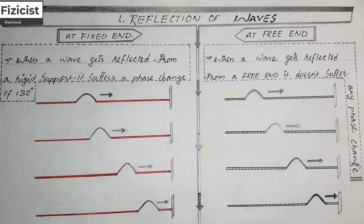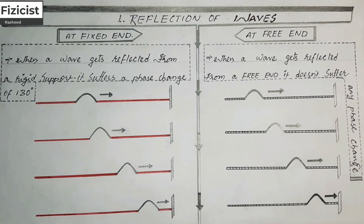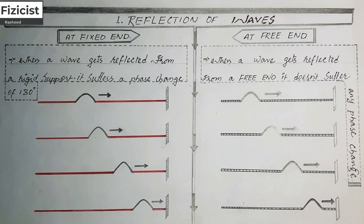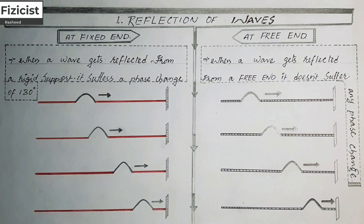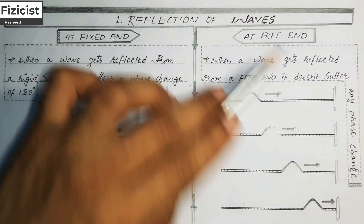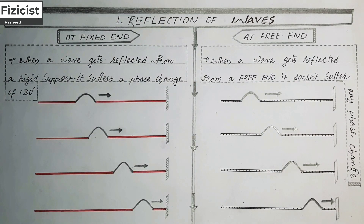As you have studied in earlier classes, light gets reflected from opaque surfaces. In the similar fashion, waves also have the property to get reflected. A wave gets reflected differently in the case of a fixed end and in the case of a free end. The fixed end is an end which is unable to move, and a free end is an end which is free to move.